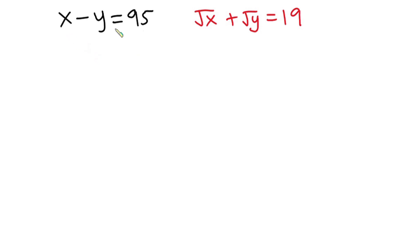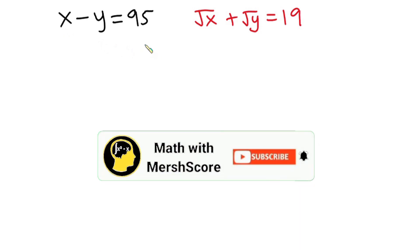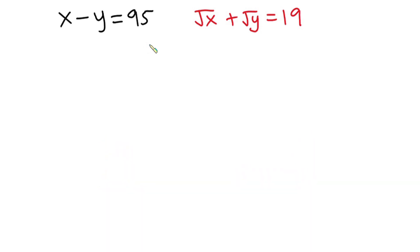Hello everyone. In this video we have this system of equations: x minus y is equal to 95, and the square root of x plus the square root of y is equal to 19. We have to find the value of x and y. Before we begin, if you are new here, please subscribe to this channel — it's free and you can change your mind at any time. Now let's get started.